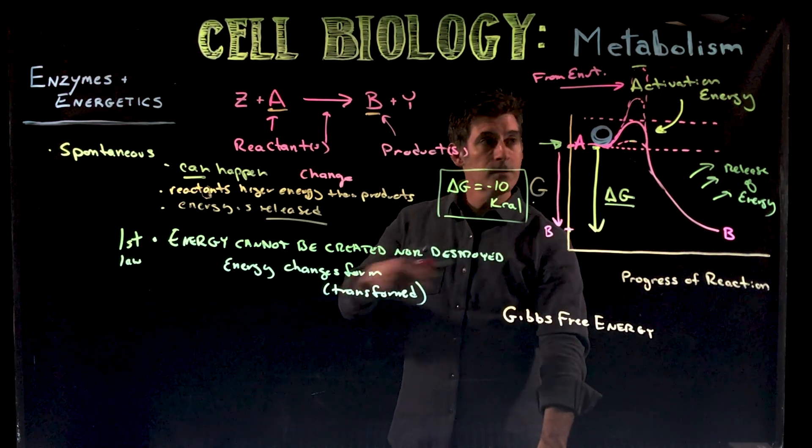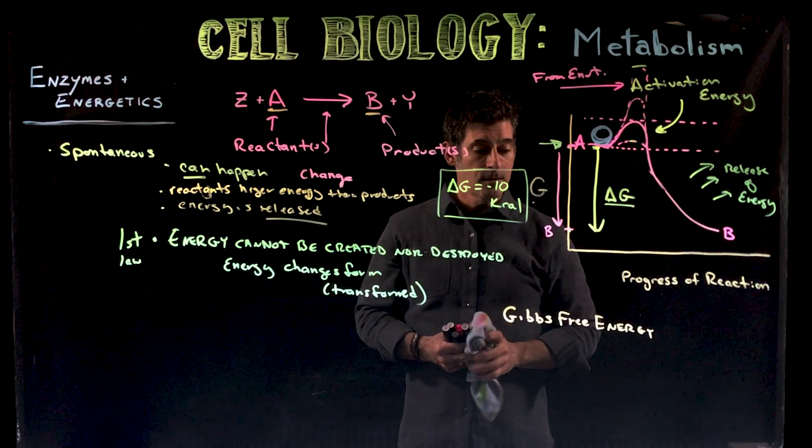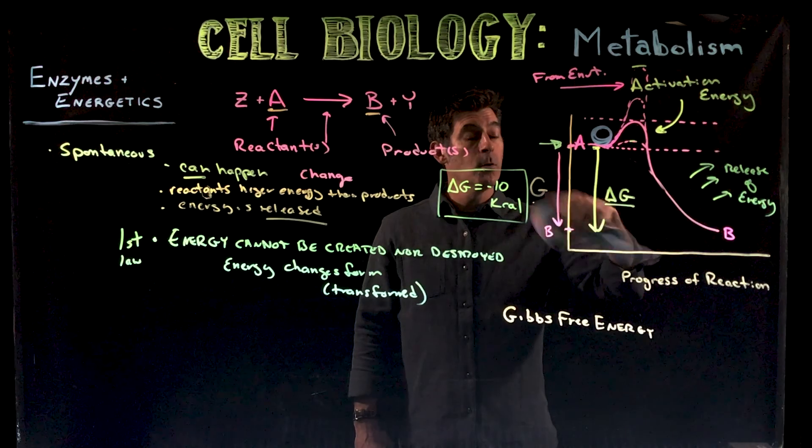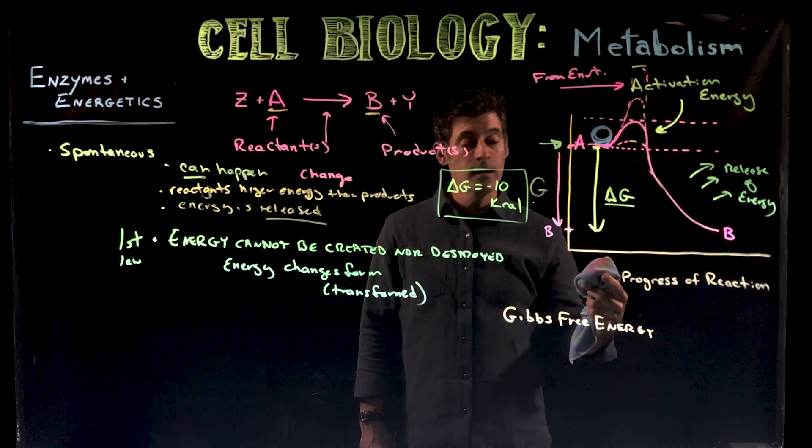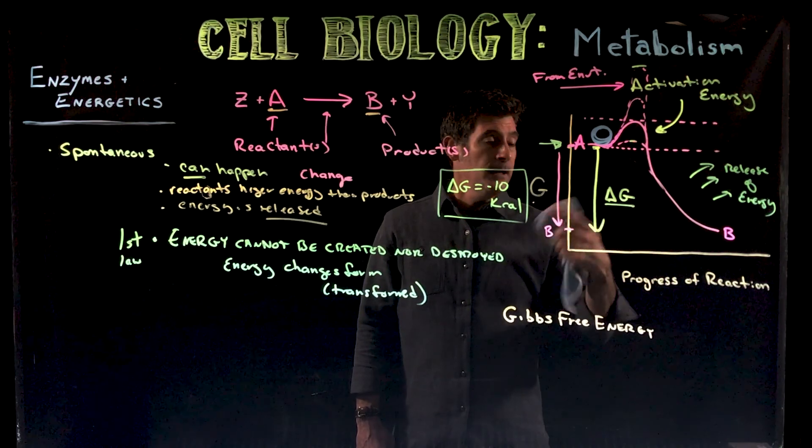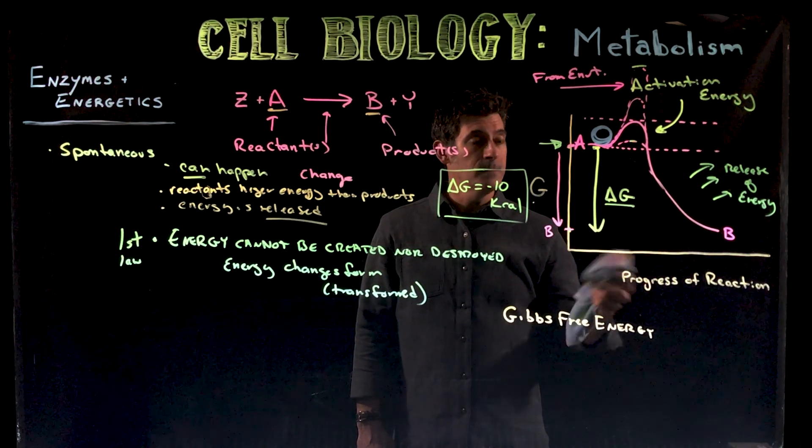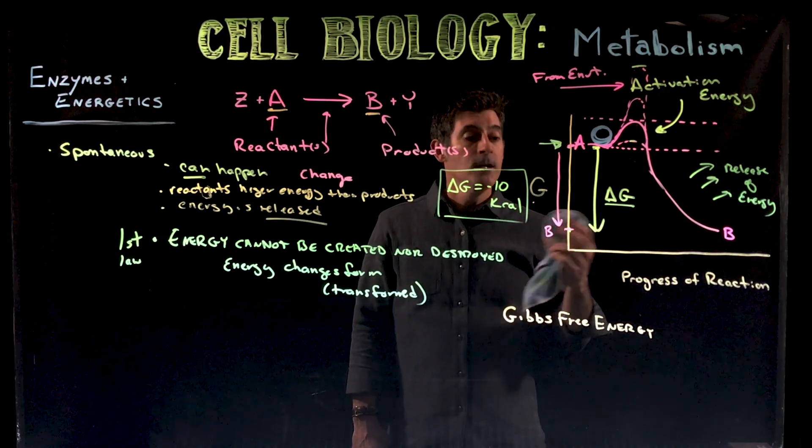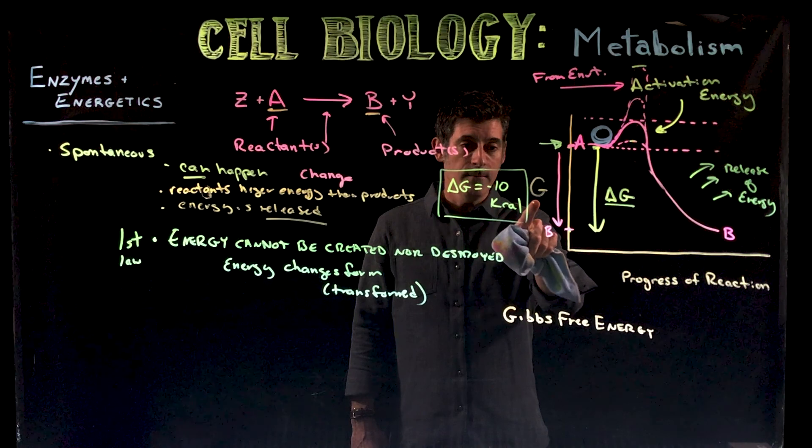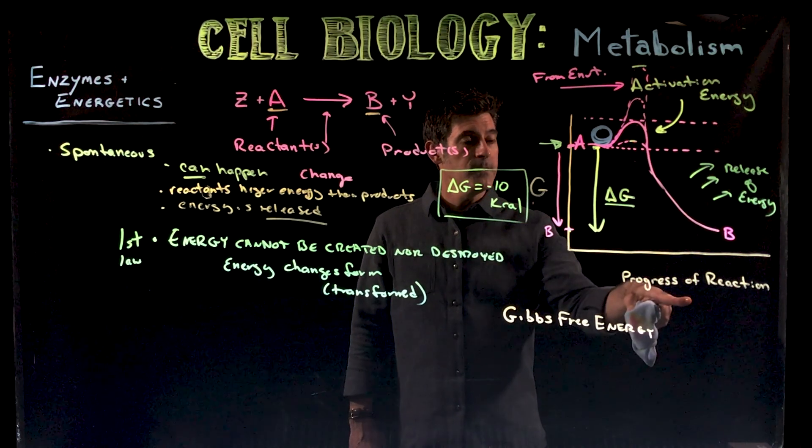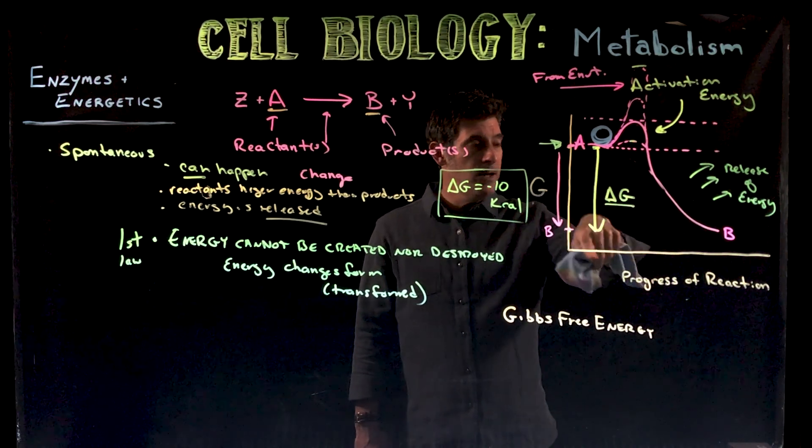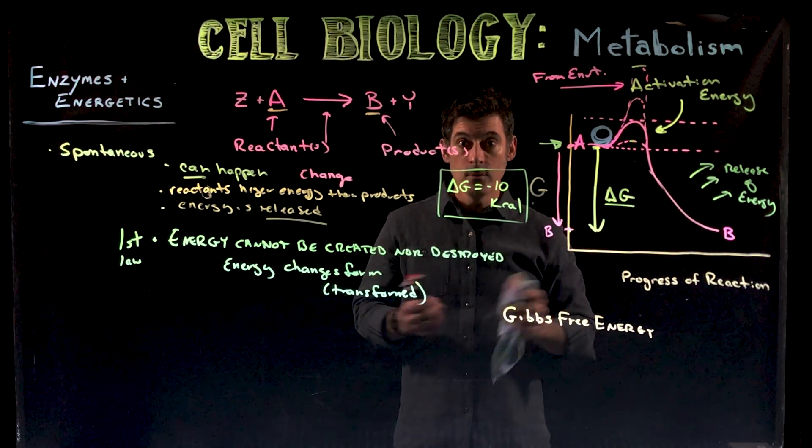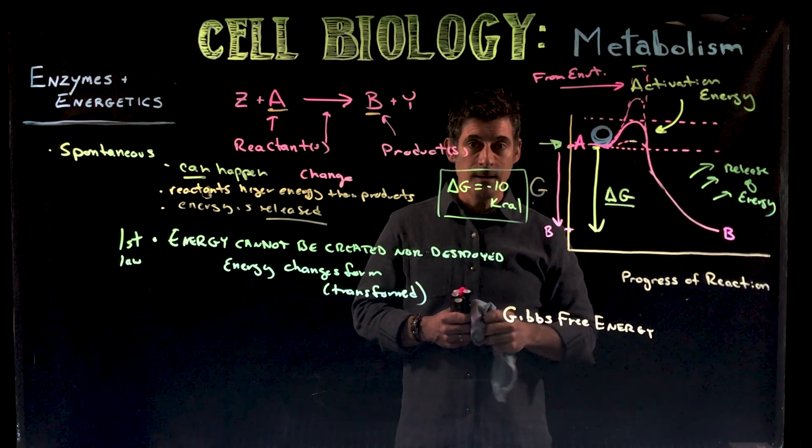So those are the first terms you need to understand. This graph is one you're going to see - I'll come back to it several times as we talk about enzymes and what enzymes do. It's a graph you'll have to be able to sketch on your own, label one that's already sketched for you, compare energy levels within them. Make sure you can label the axis of Gibbs free energy, the progress of the reaction, a reactant and product, the activation energy hump. Make sure you can do those things. That's for a spontaneous reaction.